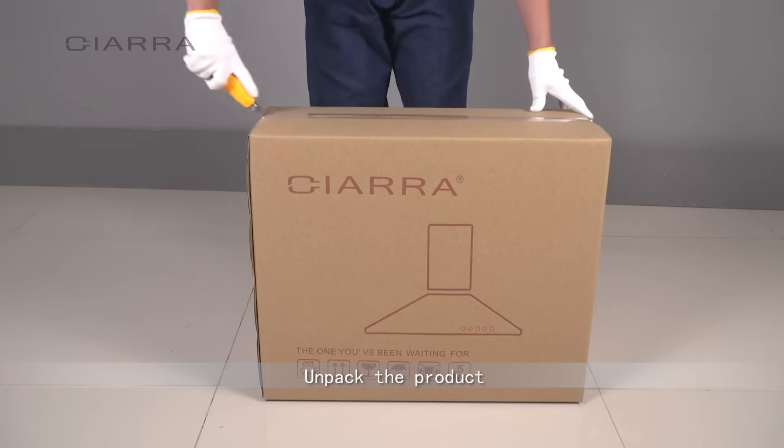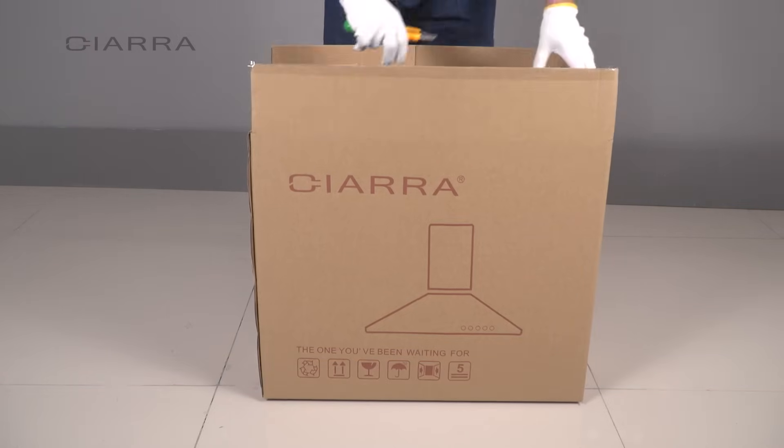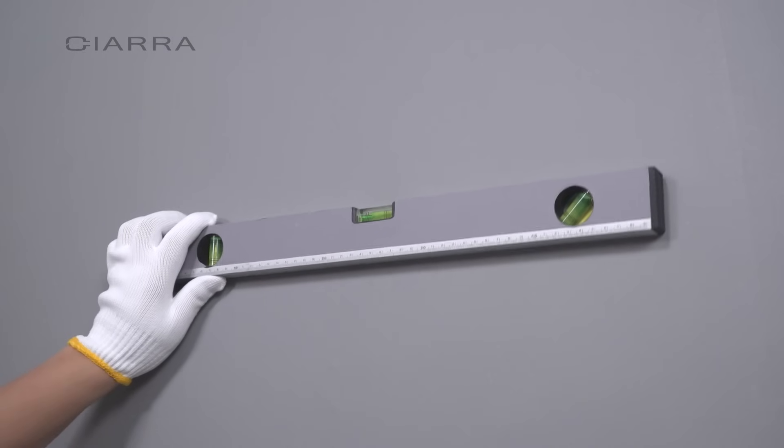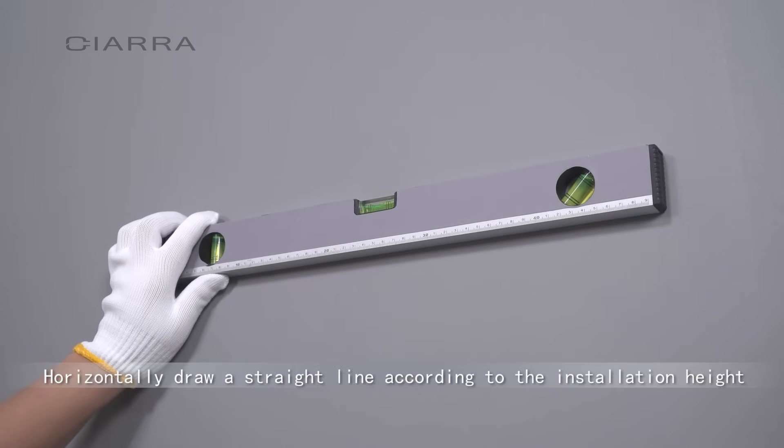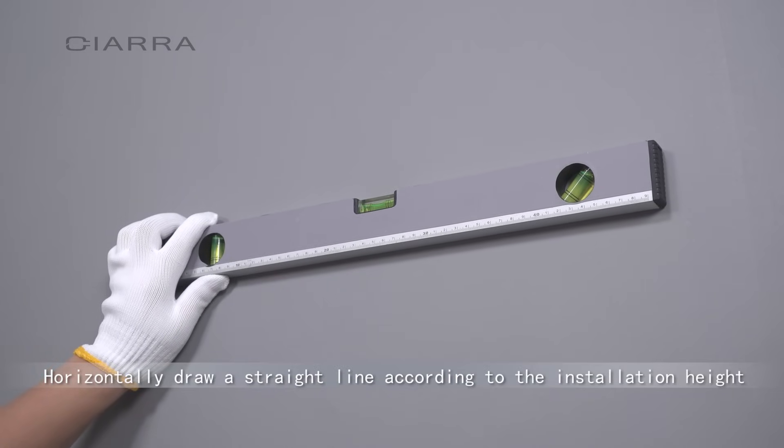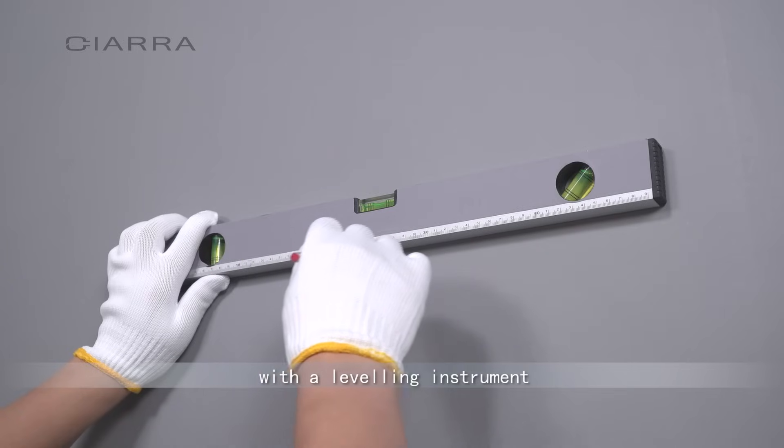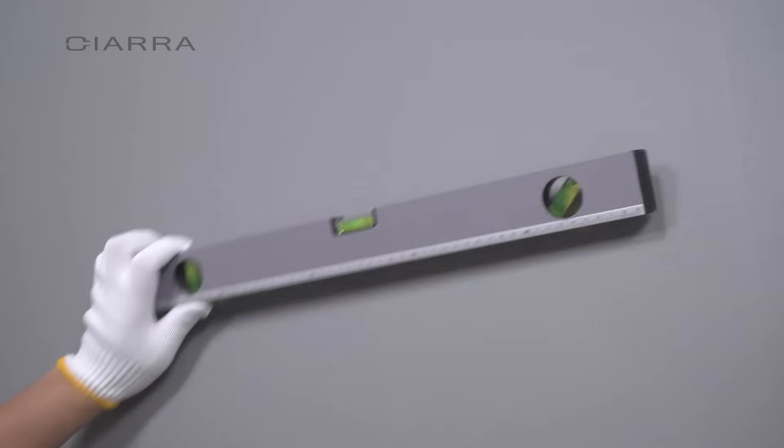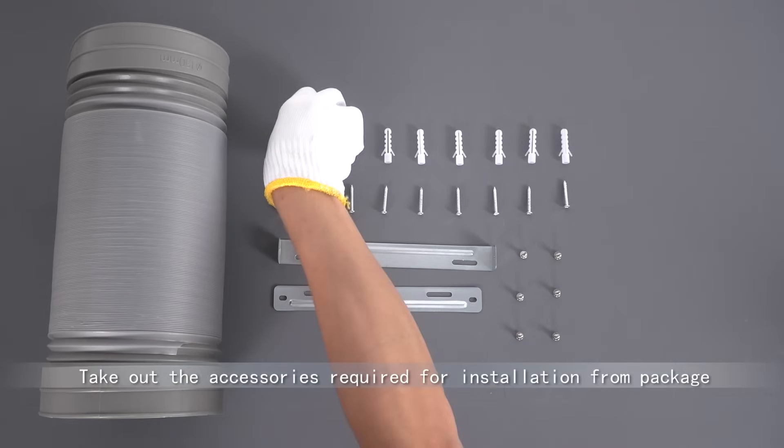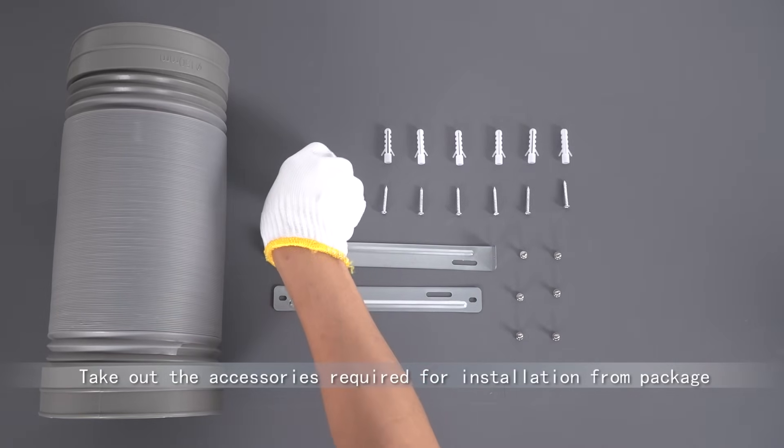Unpack the product. Horizontally draw a straight line according to the installation height specified in the instruction manual with a leveling instrument. Take out the accessories required for installation from the package.